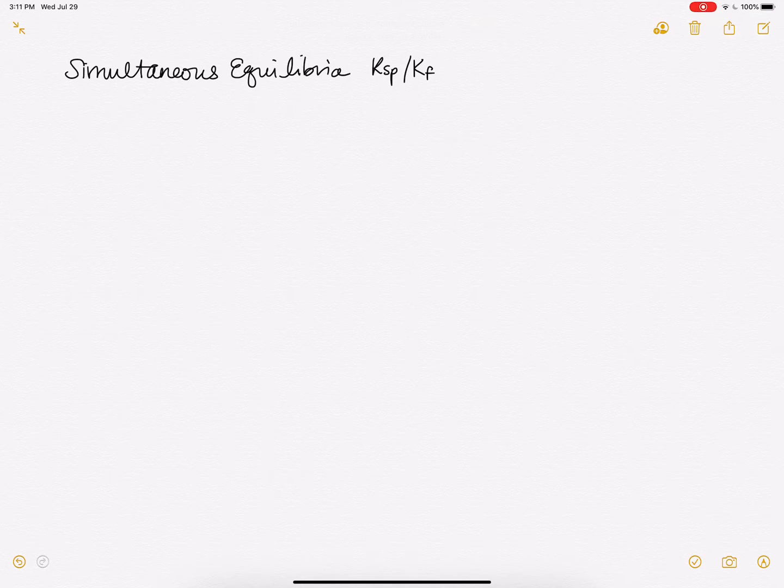So in this example I'm going to use silver chloride, so we can write the equation for the Ksp and the value is 1.8 times 10 to the minus 10th.